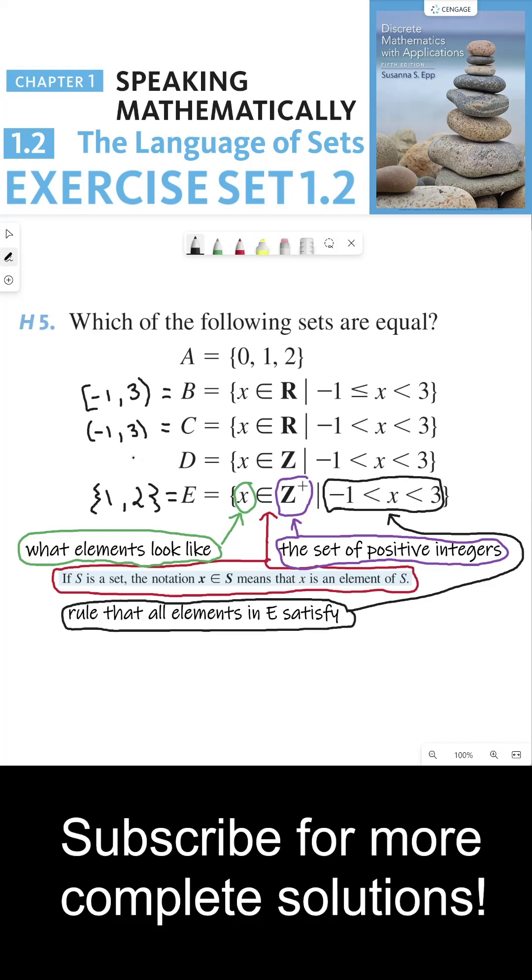And then for D, D is all the integers between negative 1 and 3. There are three integers from negative 1 to 3, not including negative 1 or 3: 0, 1, and 2. This time we include 0 because 0 is an integer. It's not a positive integer, but it's still an integer.